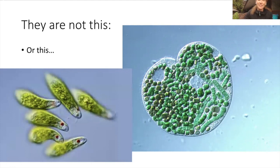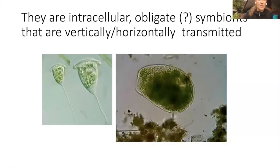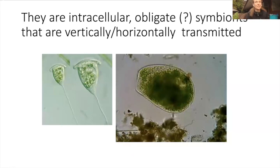Same with euglena. Euglena sometimes has chloroplasts, but it can also hunt, so it also eats photosynthetic organisms. So when we're talking about endosymbionts in general, we're talking about intracellular. They can be obligate; they don't have to be obligate.